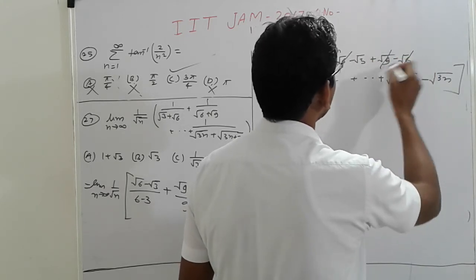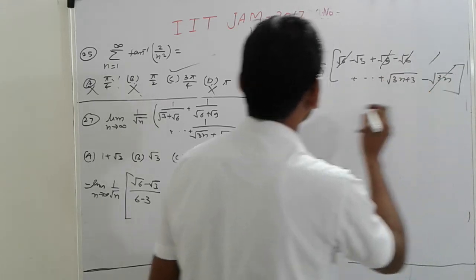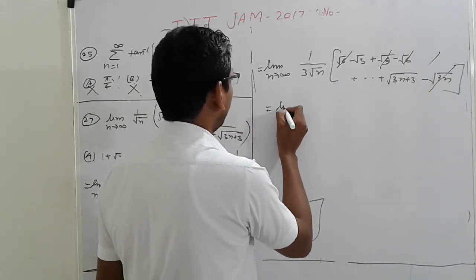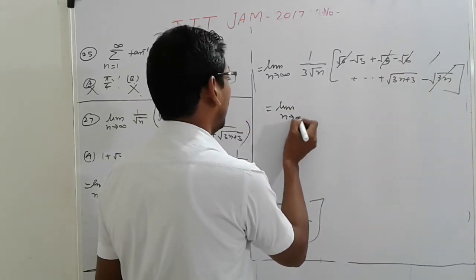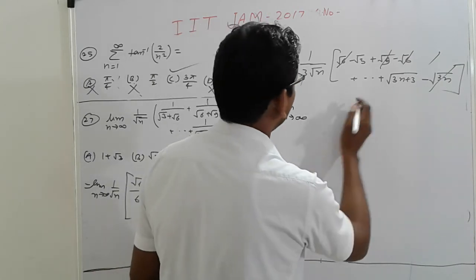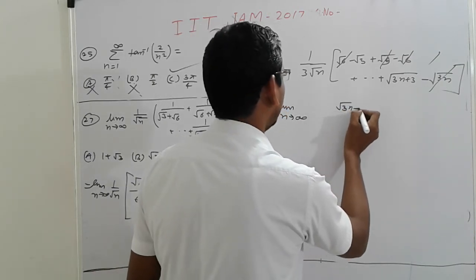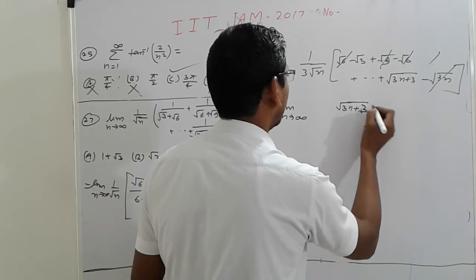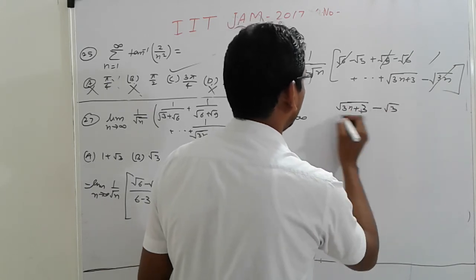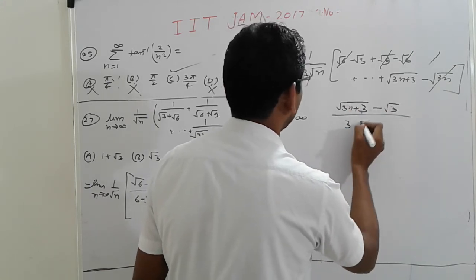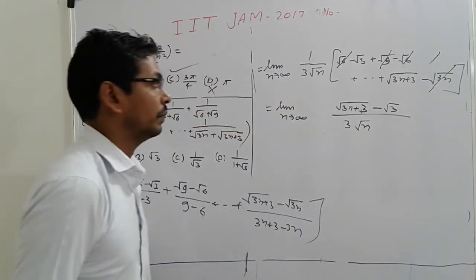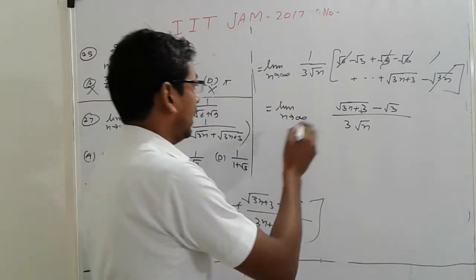Root 3 minus root 3 as n tending to infinity. That term: root(3n) plus root 3, root 3 divided by 3 root n.